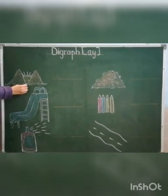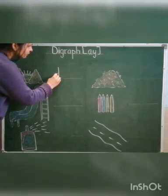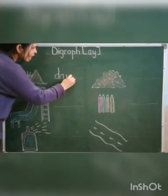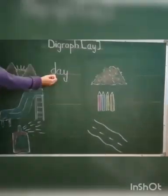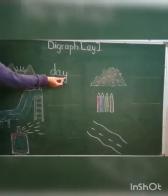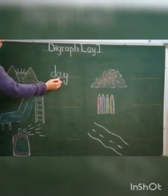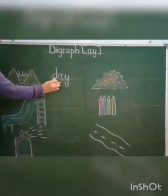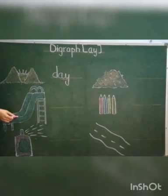So how do we write it? D, A, D. In this word, we can hear the A sound at the end. D, A, D.